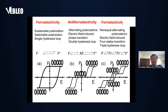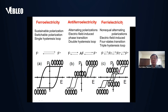The polarization is zero at zero electric field. The ferrielectric phase is more special — neighboring polarizations have different magnitudes. By changing the electric field, three or four states appear, and a triple hysteresis loop appears.